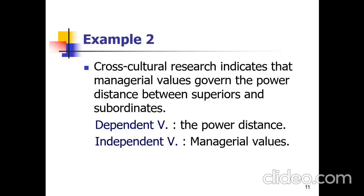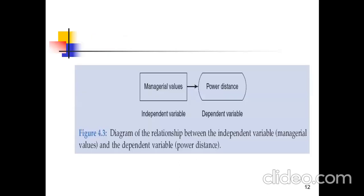This is example two. Cross-cultural research indicates that Manjiru values govern the power distance between superiors and subordinates. In this example, power distance is the dependent variable and Manjiru value is the independent variable. We can say that power distance depends on Manjiru values. A diagram also explains this relationship: Manjiru value is the independent variable which influences the dependent variable, power distance.